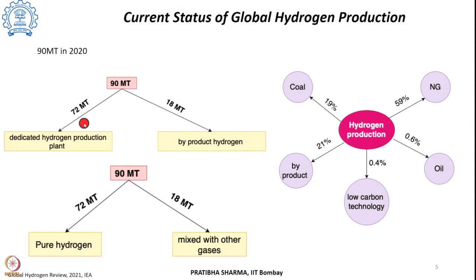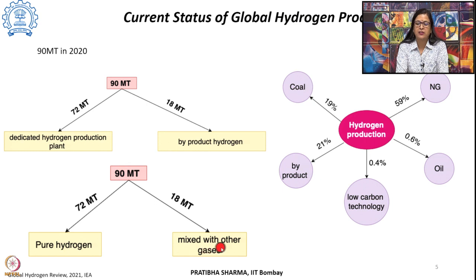Looking at the current global status in 2020, 90 million tons of hydrogen was produced globally. Of that, 79% — about 72 million tons — was produced in dedicated hydrogen production plants, and 21% — about 18 million tons — was produced as a by-product, primarily in refineries. Of the 90 million tons, 72 million tons was used as pure hydrogen in ammonia synthesis and refineries, and 18 million tons was used as a mixed gas for methanol production or DRI for steel production. Natural gas and steam methane reforming are the dominant fuel and process for hydrogen production.